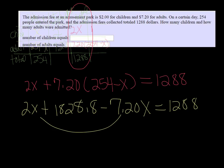And then minus 7.20X equals 1288. We can combine these like terms, we get a negative 5.20X. Let's see, 2 minus 7.2, yeah. Plus 1828.8 equals 1288.